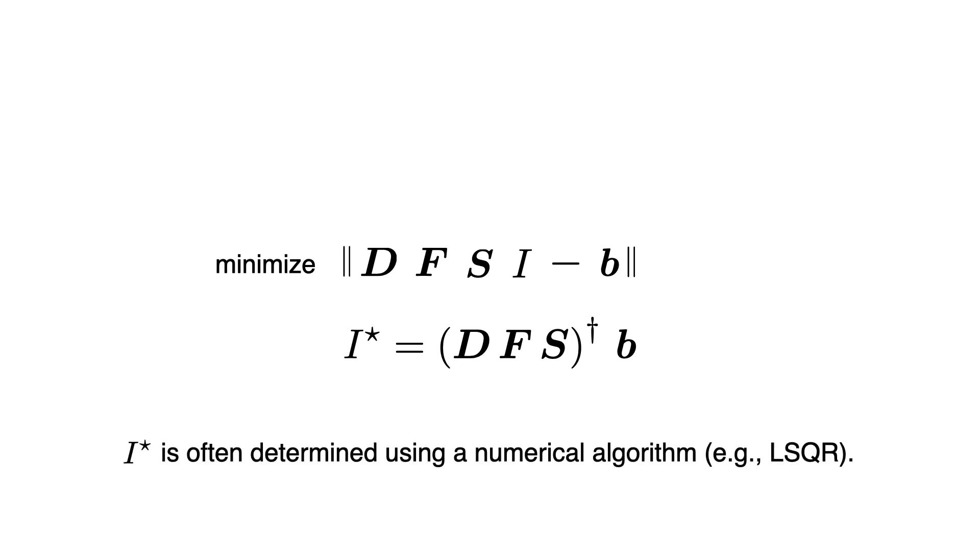One way to do that is to find the image i that minimizes the difference between DFS i and b. If this is the L2 norm that we're minimizing, then the solution to the above optimization problem is just the pseudoinverse of DFS times b. The solution i star, though, is often determined using a numerical algorithm like LSQR because these matrices are so large.